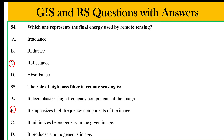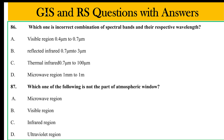The remote sensing spectrum ranges: visible 0.4–0.7 µm, reflected infrared 0.7 µm, thermal infrared 0.7 µm to 10 mm, and radar/microwave range. Thermal infrared is 0.7 micrometers.